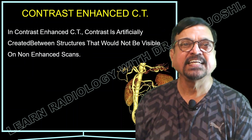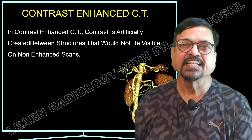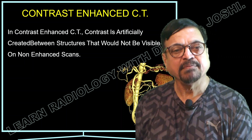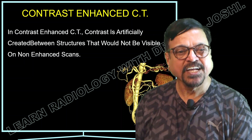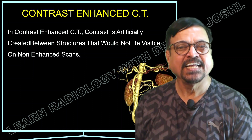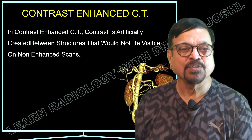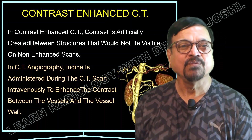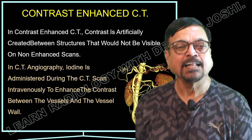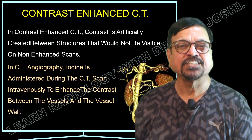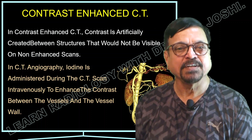In contrast-enhanced CT, contrast is artificially created between structures that would otherwise be invisible on a plain scan. The difference in attenuation values between tissues allows their separate identification. Enhancement patterns of normal tissues, blood vessels, and pathological structures are different, allowing the radiologist to distinguish them. In CT angiography, iodine is administered intravenously to enhance contrast between the vessel lumen, vessel wall, and surrounding structures.